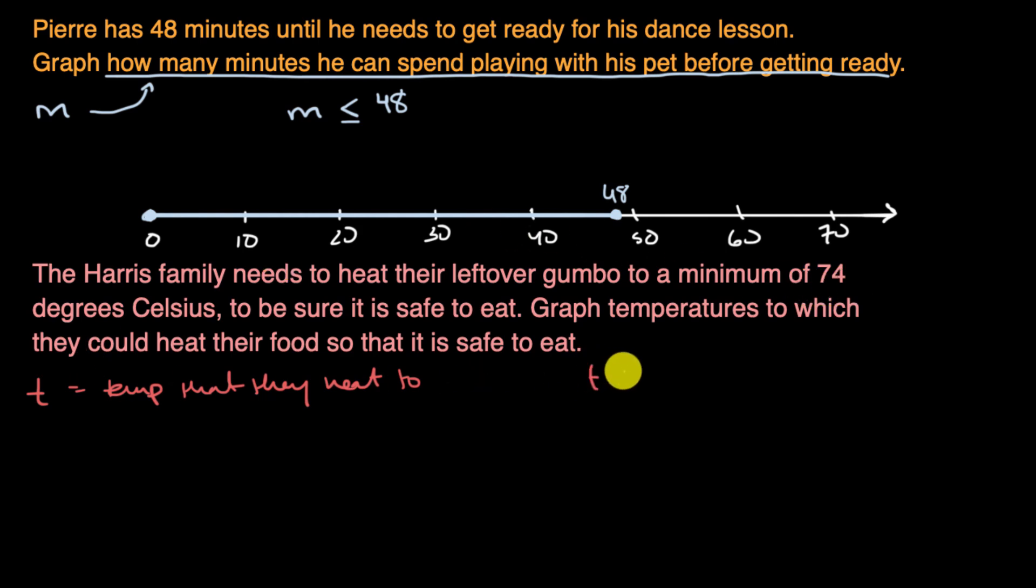So that means T is not just greater than 74 degrees Celsius. It can also be exactly 74 degrees Celsius, because they say as long as it's a minimum of 74. So if it's exactly 74, that is apparently going to be safe to eat. And anything higher than that is also going to be safe to eat.